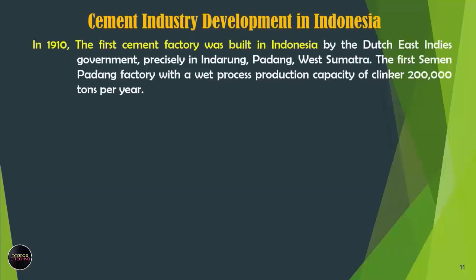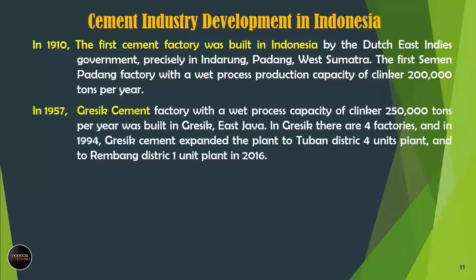Cement industry development in Indonesia: in 1910, the first cement factory was built in Indonesia by the Dutch East Indies government, precisely in Indarung, Padang, West Sumatra. The first unit of Semen Padang factory used a wet process with a production capacity of 200,000 tons of clinker per year, and currently Semen Padang has 5 operating units with a capacity of 8.5 million tons of clinker per year. The wet process Indarung Unit 1 is no longer in operation. In 1957, the Gresik Cement Factory with a wet process capacity of 250,000 tons of clinker per year was established.